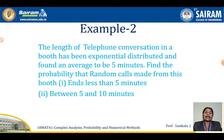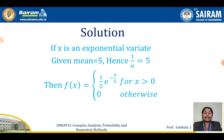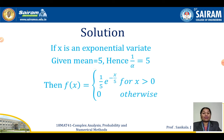We want to find the probability that the call ends less than 5 minutes, i.e., P(X < 5). Here, f(x) = (1/5) times e to the power minus x by 5, for x greater than 0, and 0 otherwise.